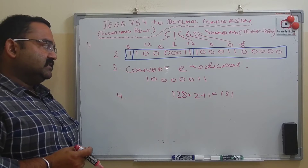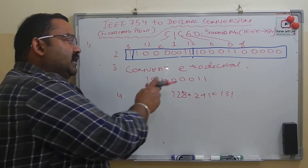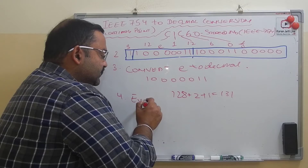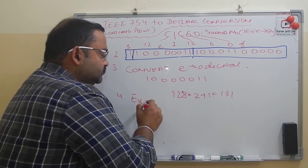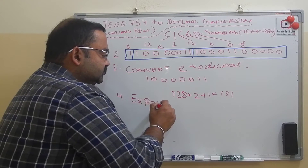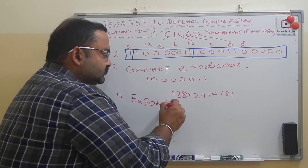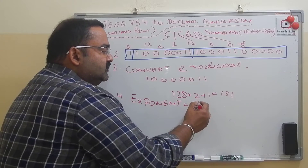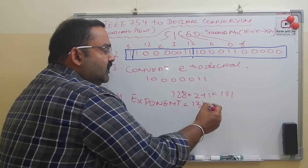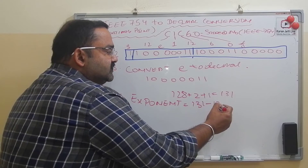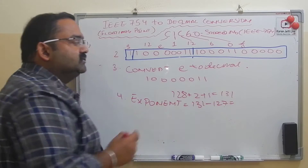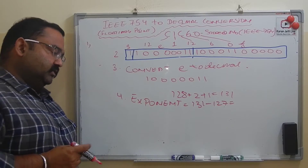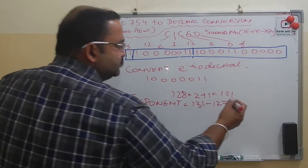Step four continued: subtract the excess code to get the actual exponent. We take 131 minus the excess value of 127, which gives us 4. So our exponent is 4.